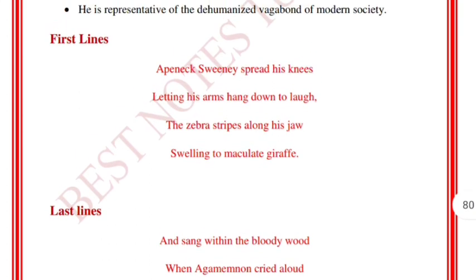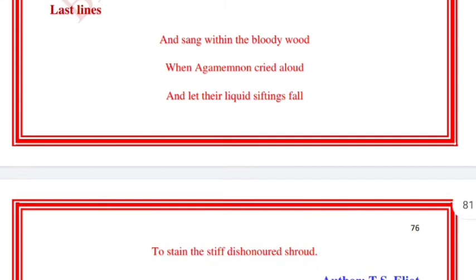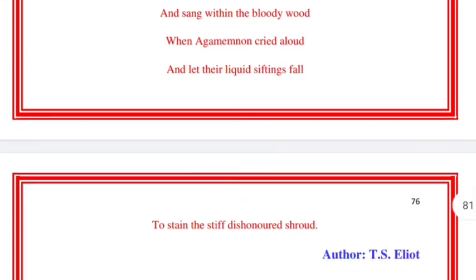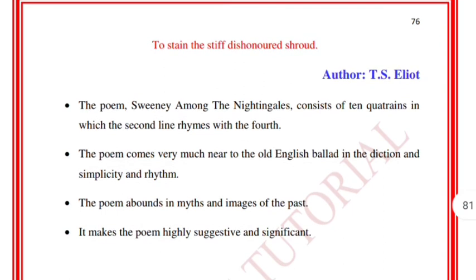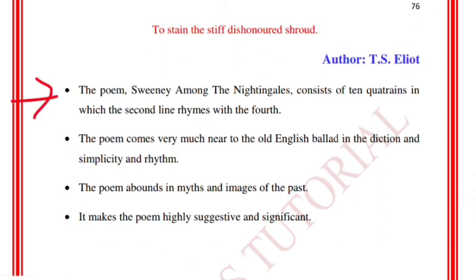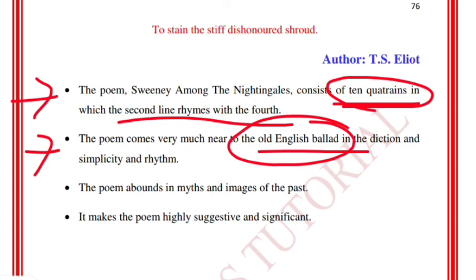The first lines are: 'Apeneck Sweeney spread his knees / Letting his arms hang down to laugh / The zebra stripes along his jaw / Swelling to maculate giraffe / And sang within the bloodied wood / When Agamemnon cried aloud.' T.S. Eliot's poem Sweeney Among the Nightingales consists of ten quatrains in which the second line rhymes with the fourth. The poem comes very close to the old English ballad in its diction, simplicity, and rhyme. The poem abounds in myth and images of the past, making it highly suggestive and significant.